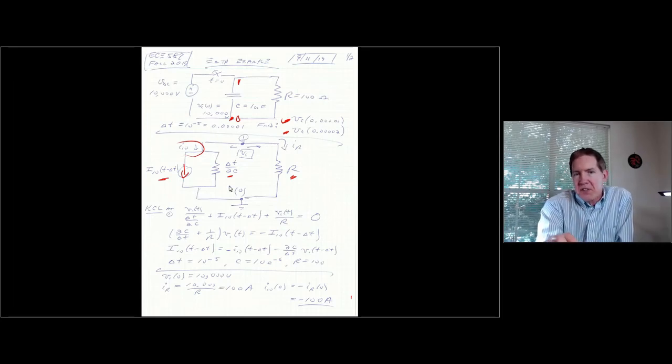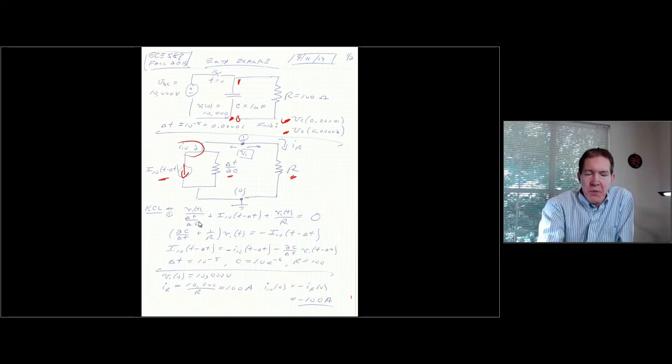So once I've made the substitution, I can go ahead and I can write a Kirchhoff current law relationship for node number one. Current's going out. So I'll have V1 divided by delta T over 2C. That's this current. I'll have plus I10, the history term, which is this current. I'll have the current going through the resistor, which is V1 over R. All this sums to zero.